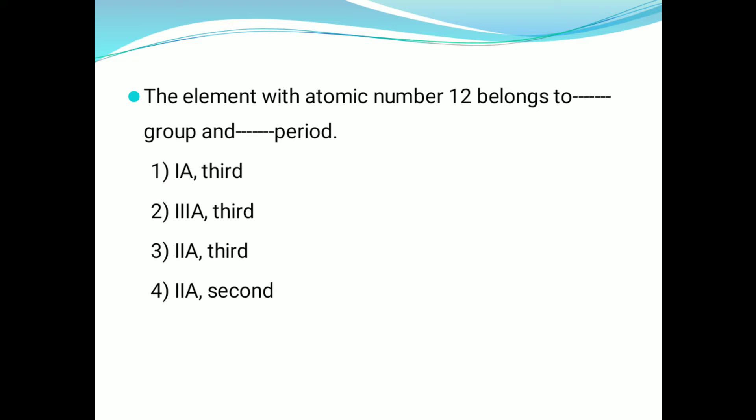For example, in the outermost orbit, the valence shell electrons determine the group. If the outermost orbit has 1 electron, it is the first-A group. If it has 2 electrons, it is the second-A group. If it has 5 electrons, it is the fifth-A group.